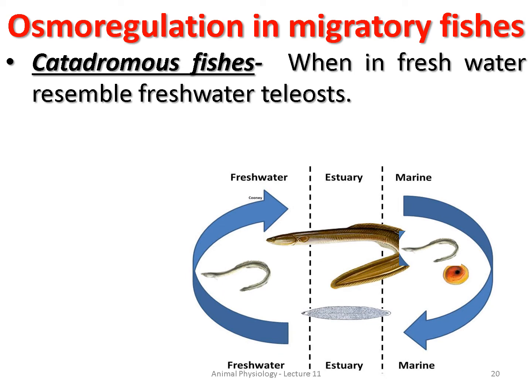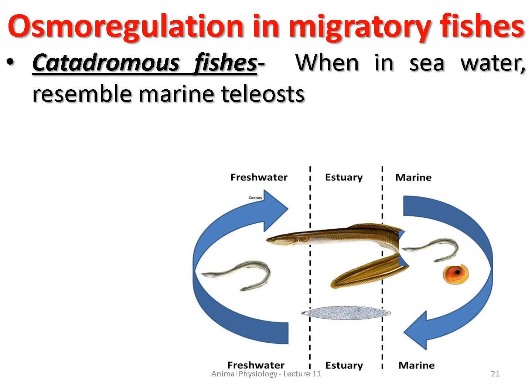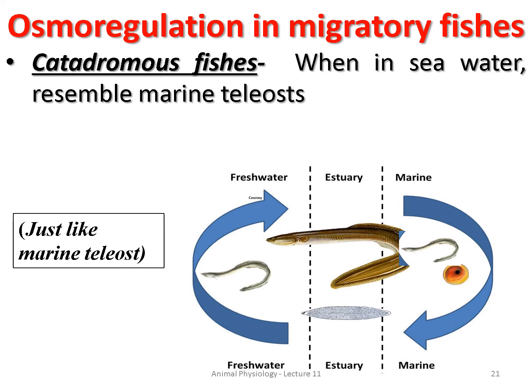For catadromous fish: when they are in freshwater it resembles freshwater teleost — the body is hypertonic, the surrounding medium is hypotonic, so endosmosis occurs. When they are in seawater it is just like marine teleost — the body is hypotonic, the surrounding medium is hypertonic, so exosmosis occurs.